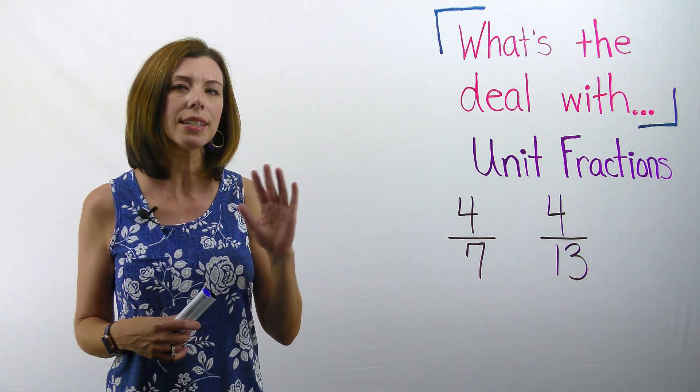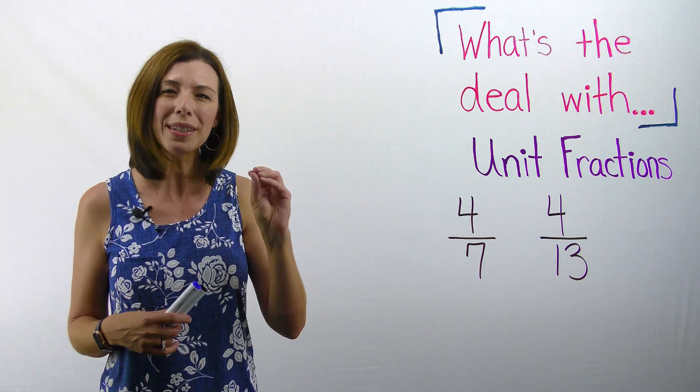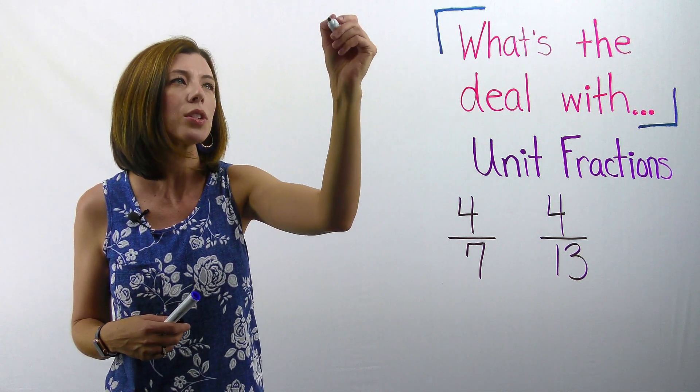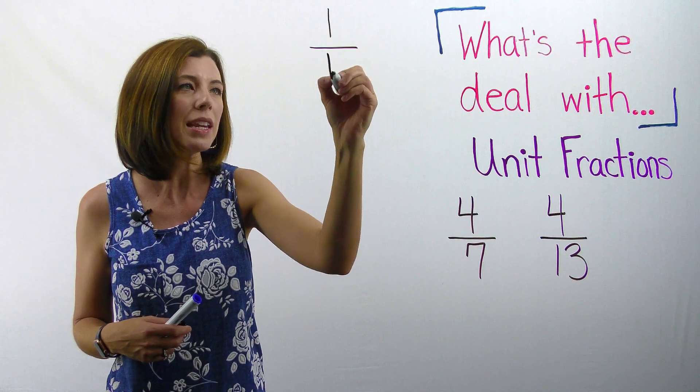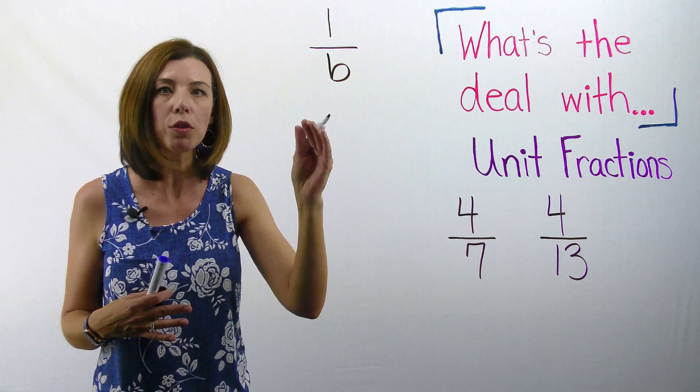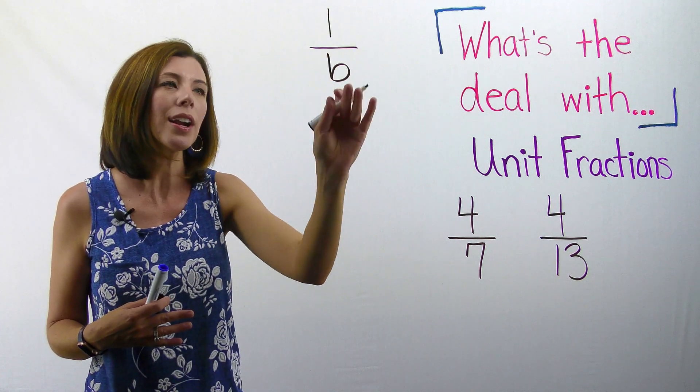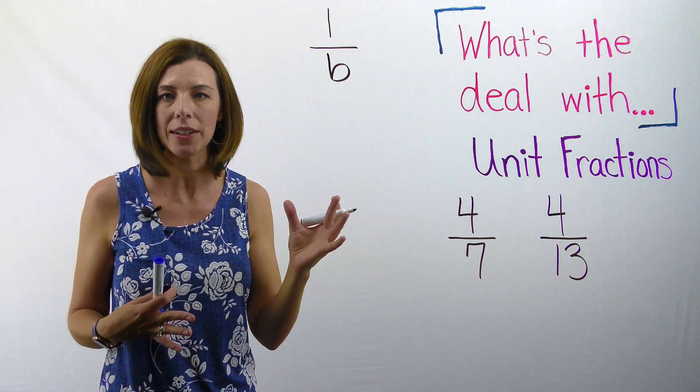So 4 sevenths is the same as, remember, when we say unit fractions, we're thinking about any fraction where it's one over b. Literally, we say one over b and you'll see that in the Common Core Standards because it's saying that there's one in the numerator and then b is whatever the denominator is.